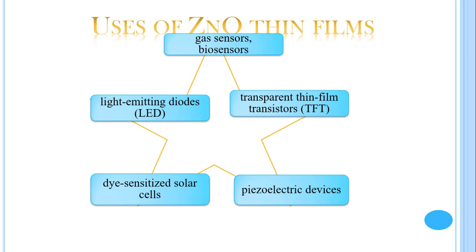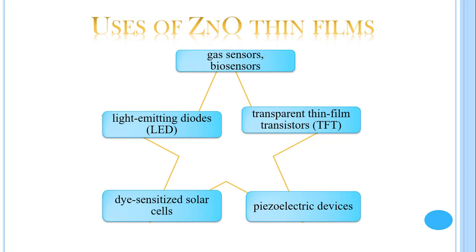ZnO thin films are used in gas sensors, biosensors, transparent thin film transistors (TFT), piezoelectric devices, dye-sensitized solar cells, and light-emitting LEDs.